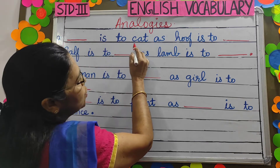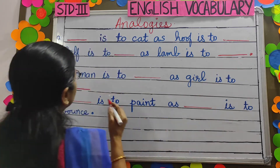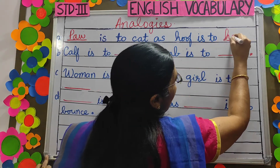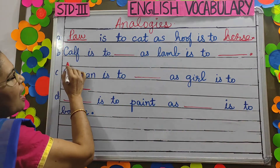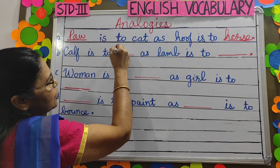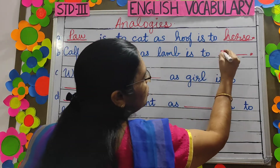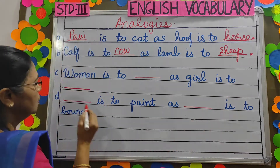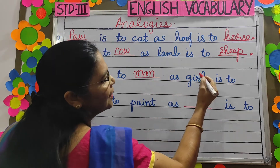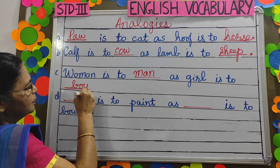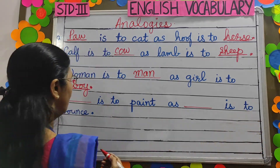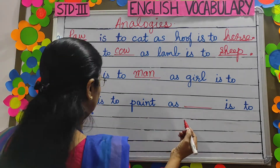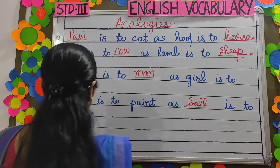Paw is to cat as hoof is to horse. Calf is to cow as lamb is to sheep. Woman is to man as girl is to boy. Brush is to paint as ball is to bounce.